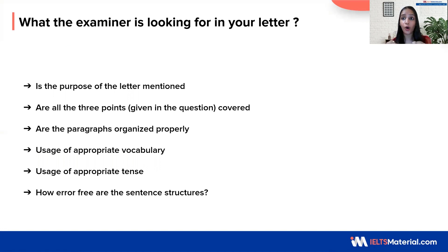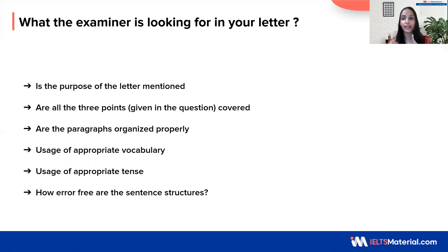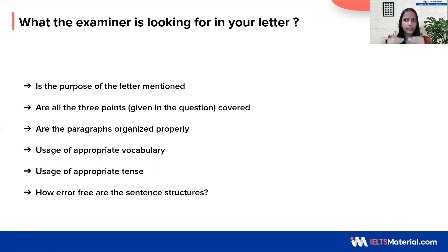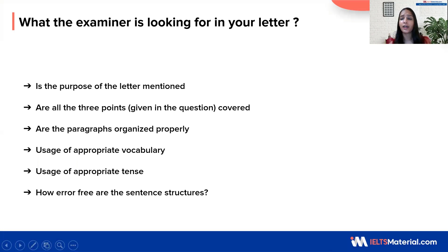Now that we have understood the nitty gritties of letter writing, this is what you should examine after you're done with the letter. You write a minimum of 150 words — you can exceed the word limit, that's perfectly fine, but do not write less than 150 words. Following are the things that you should proofread: Have you written the purpose of the letter clearly? Have you covered all the three points coherently? Are the paragraphs organized properly? Is there clarity between the paragraphs? Have you used the correct vocabulary, grammar, and correct tense structures? Make sure that you do not make grammatical errors or punctuation errors so that you don't lose score in your grammatical range and accuracy.